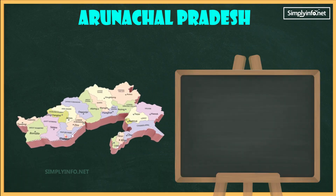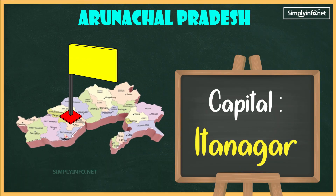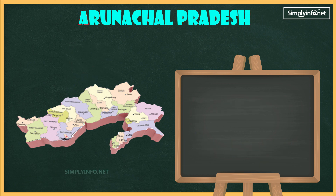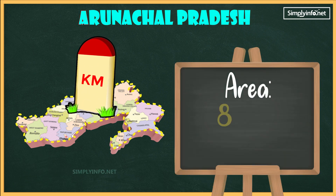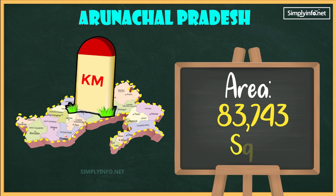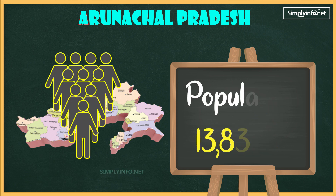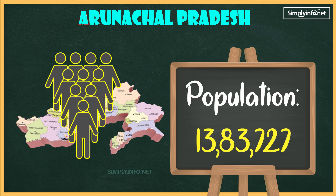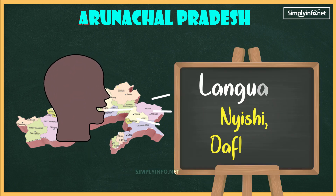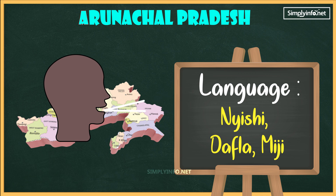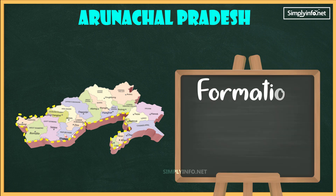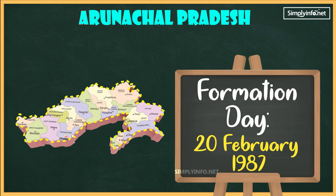Arunachal Pradesh: capital Itanagar. Area: 83,743 square kilometers. Population: 13 lakh 83,727 people. Languages: Naishi, Dafla, and Miji. State formation day: 20th February 1987.